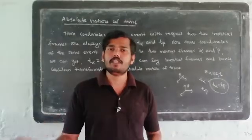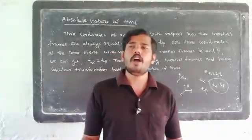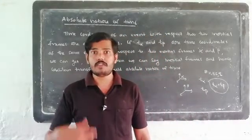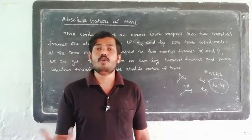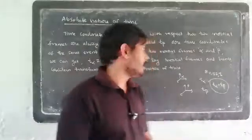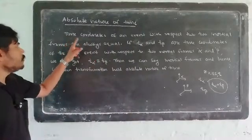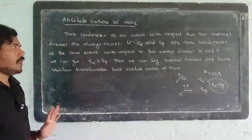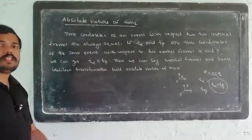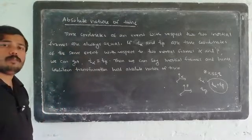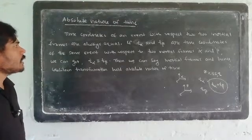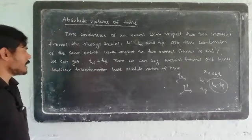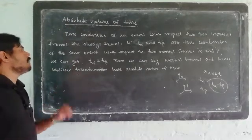In inertial frames of reference, when we observe an event, the time coordinates are equal. The Galilean transformation holds the absolute nature of time. Time coordinates of an event with respect to two inertial frames are always equal. If T-alpha and T-beta are time coordinates of the same event with respect to two inertial frames alpha and beta respectively, we get T-alpha equal to T-beta.